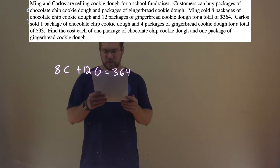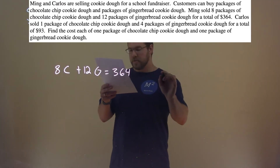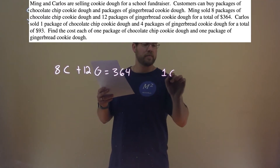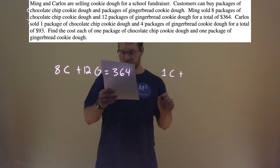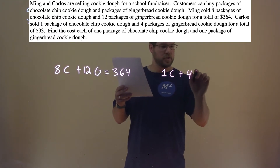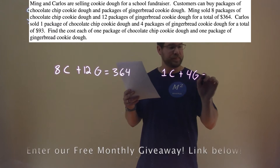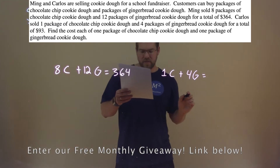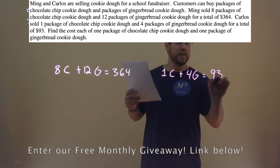Carlos, on the other hand, sold 1 chocolate chip cookie dough, so let's say 1C, plus 4 packages of gingerbread — not as good of a seller. And that equals $93.